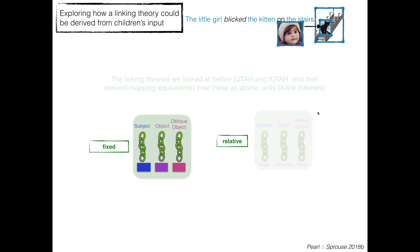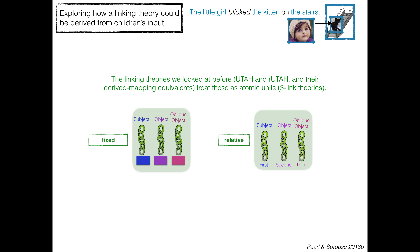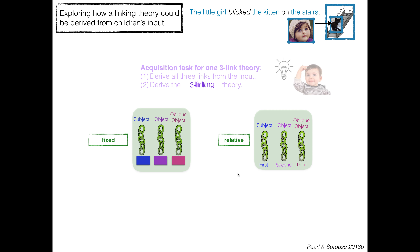The linking theories we looked at before — both UTAH and RUTA and the derived mapping equivalents — treat these as atomic units. These are three-link theories: you either obey it or you don't. The acquisition task for one three-link theory involves two steps: first, you have to derive all three individual links from the input, and then you have to derive the three-link linking theory as a unit.